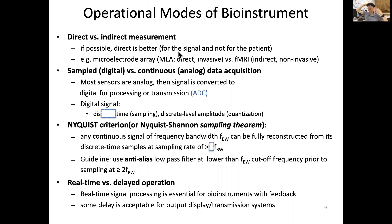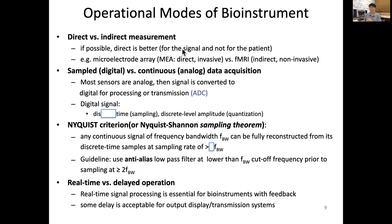In terms of signal quality, to measure it directly you may have to perform brain surgery — remove the scalp, remove the skull bone, and place electrodes directly on top of the brain — which gives a better signal. So if possible, direct measurement is better for signal quality, but not necessarily for the patient. This direct electrode measurement is called ECoG. For example, a microelectrode array, or MEA, can be measured in direct contact, which means it could be invasive. It may give a better signal, but it is invasive.